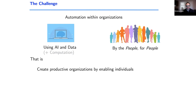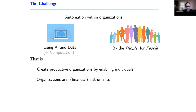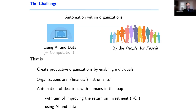One way to think about automation in organizations is making organizations productive by enabling individuals. At the highest level, a for-profit organization is a financial instrument — put in $100 to run it, if it makes $2 a month that's 24% returns, if $2 a year that's 2%. What we want to do is enable individuals to make operations better, improving return on investments using AI and data.